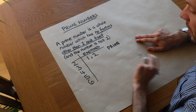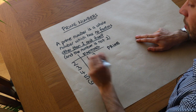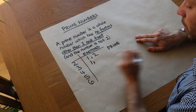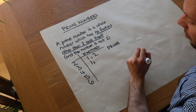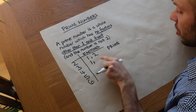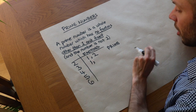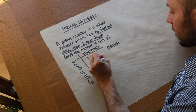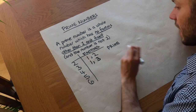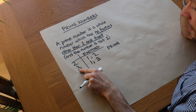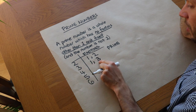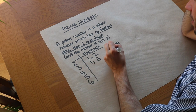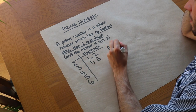What about three? Does one go into three? Yes — one always goes into every number. Does two go into three? No. Does three go into three? Yes. Three has no factors other than one and itself, so three is therefore prime.